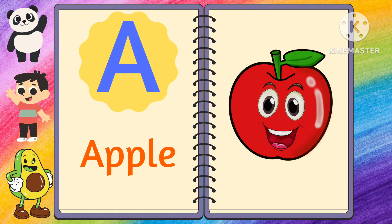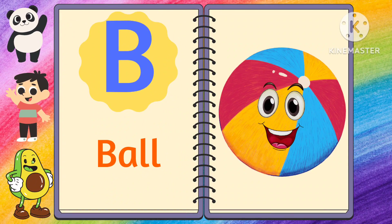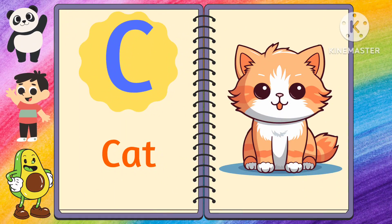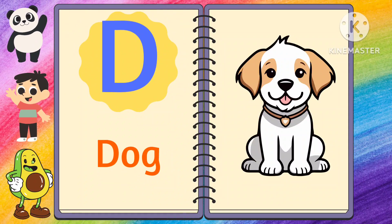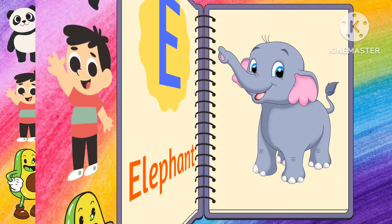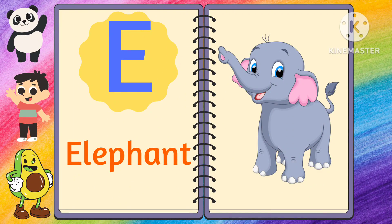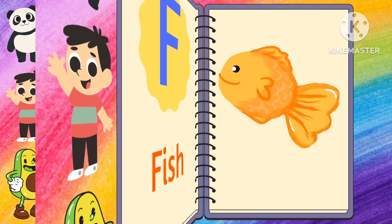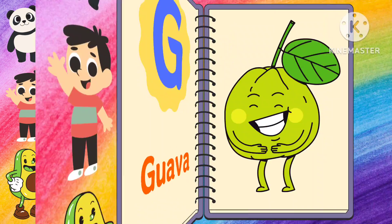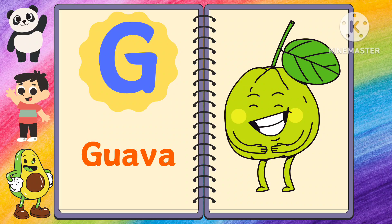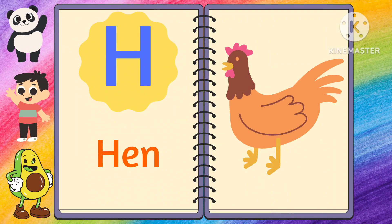A for apple. B for ball. C for cat. D for dog. E for elephant. F for fish. G for guava. H for hen.